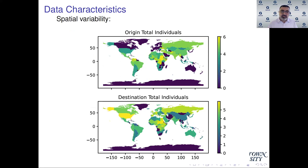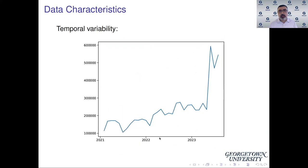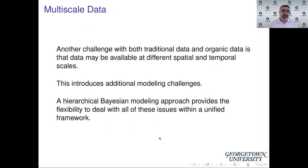Another characteristic of this data is spatial variability. Looking at a map of origin and destination in log-base-10 numbers, you can see spatial variability, clustering, and variability over different parts of the world — constantly changing as new events occur. Temporal variability is also very important: this process is non-stationary. There are always trends — over the past several years we've seen increasing trends — but also bursts of displacement corresponding to events like Ukraine and Rohingya. Your model needs to find ways to capture this if you want good forecasting.